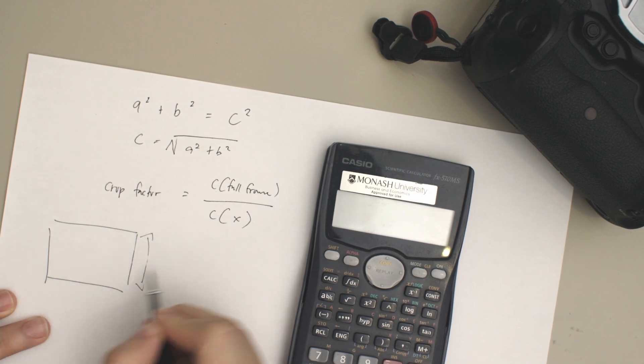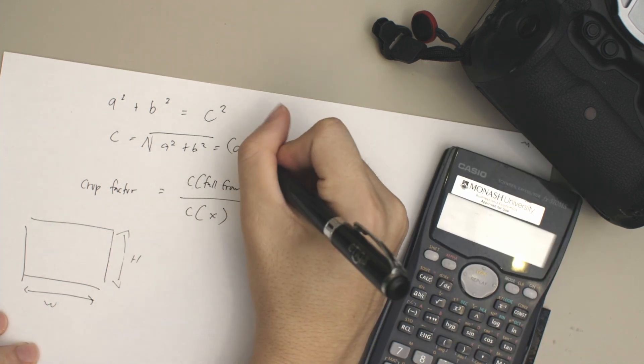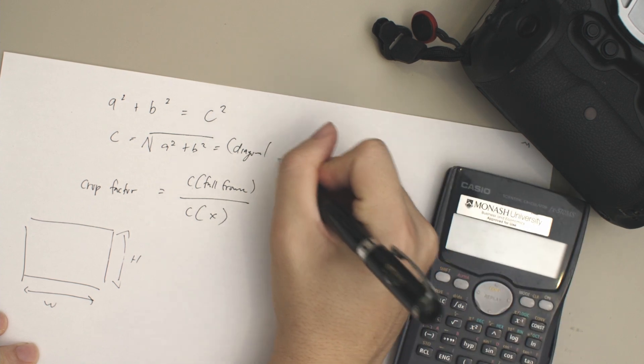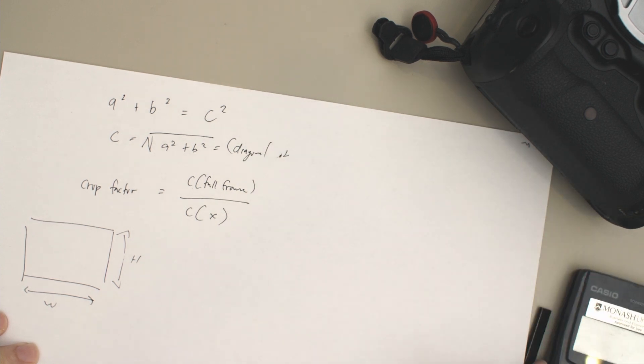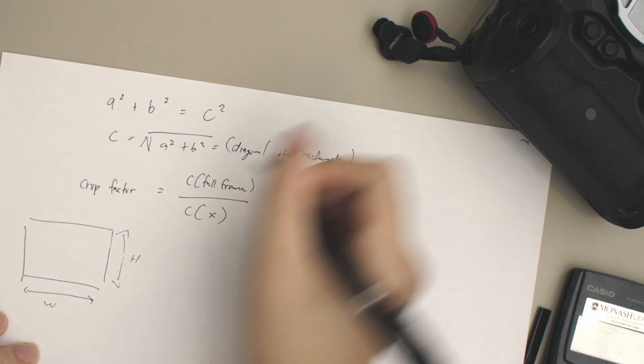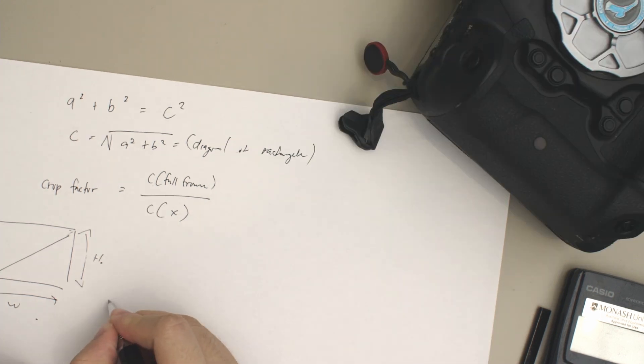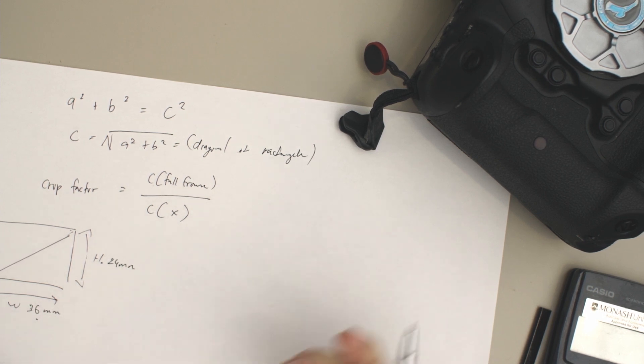There are a few values that we need to find out first. As we all understand, your sensor size is a rectangle, and you have the height and you have the width. The way we're actually using this formula is we're looking for the diagonal of the rectangle. This is what we're going to be looking for, so basically you need the two values—you need the height and the width. The value is 36 millimeters by 24 millimeters.